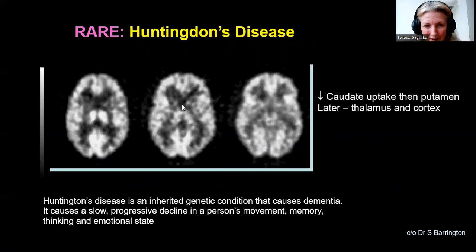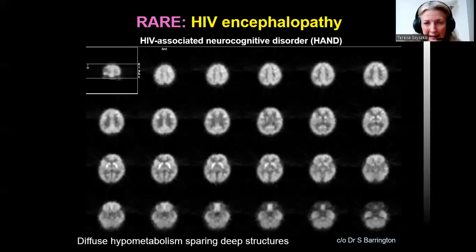Huntington's disease: here we have decreased uptake within the caudate head — first the caudate uptake declines, then the putamen uptake. It's a genetic condition with slow progression. In terms of HIV, HIV encephalopathy and HIV-associated neurocognitive disorder show a global decrease in uptake with preserved uptake in the deep structures such as the basal ganglia and thalamus. We don't tend to see this very much now because of effective HIV treatments.